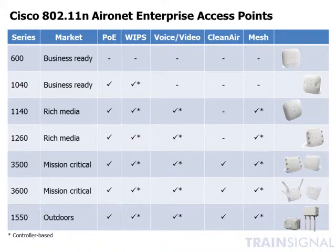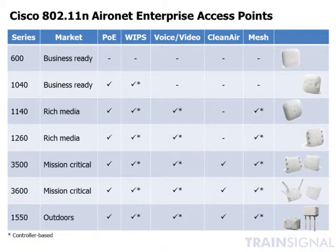The 3500 and 3600 both come with options for internal or external antennas. The 3500 has three antennas for the 2.4 GHz band and three for the 5 GHz band — a 3x3 MIMO solution. The 3600 has four antennas, making it the first 4x4 MIMO solution.